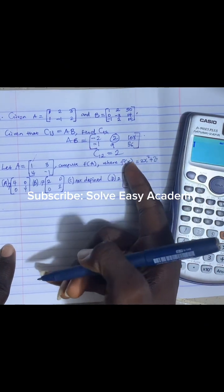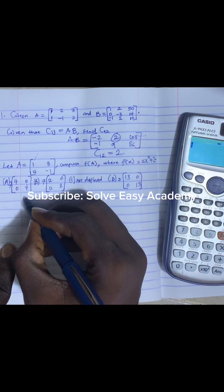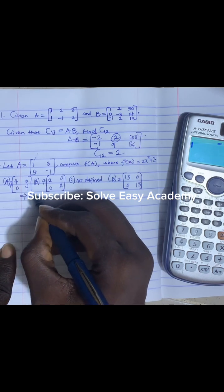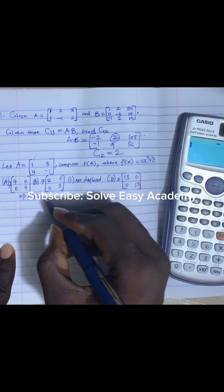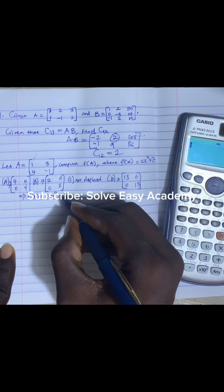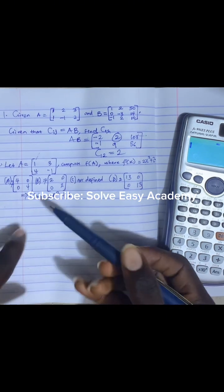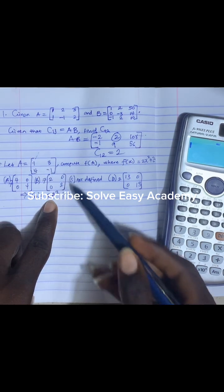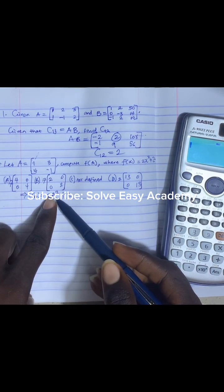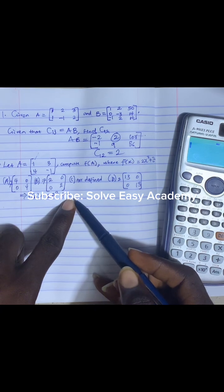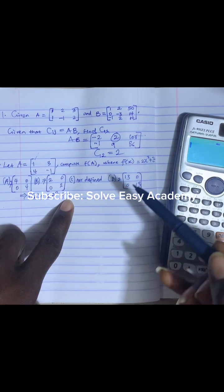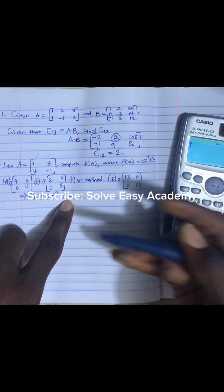We're given f of x. It implies that f of A will be equal to - all we have to do is change x to be A. So we have 2A squared plus 2. But A is a matrix. We cannot add a matrix to a scalar because a number like this is a scalar.